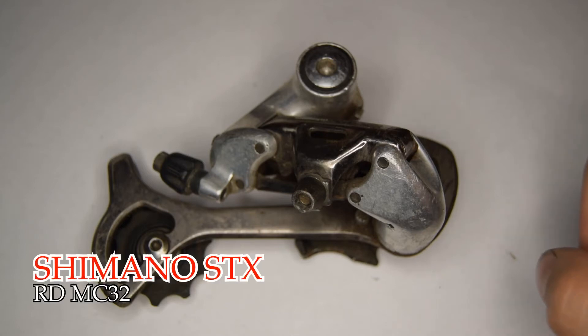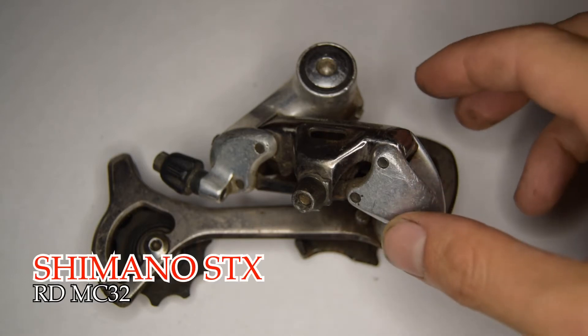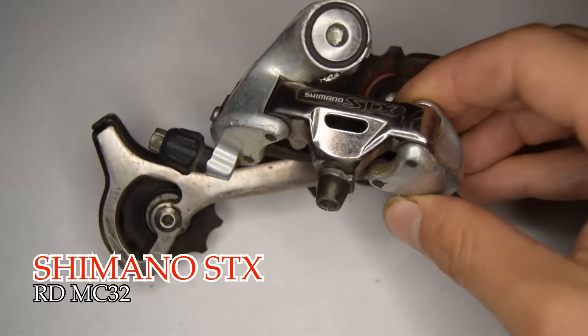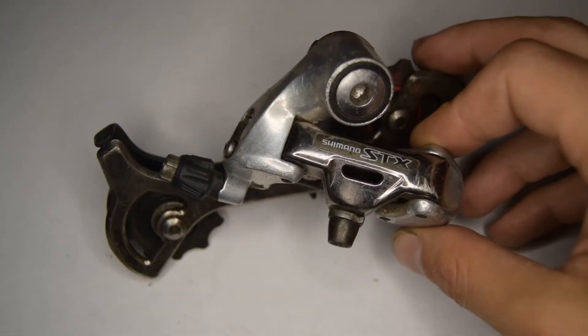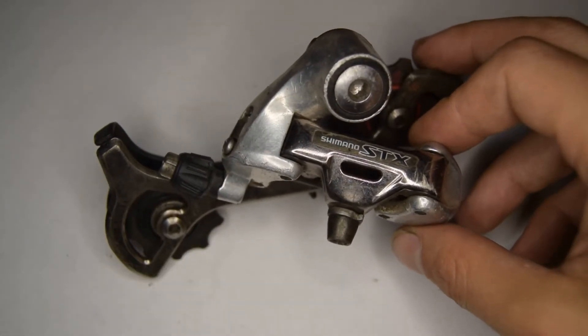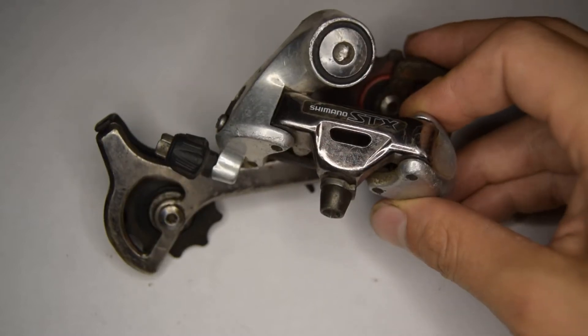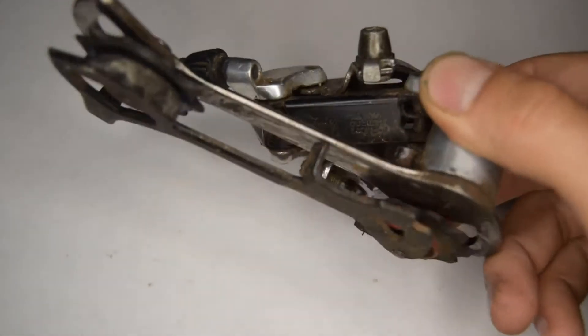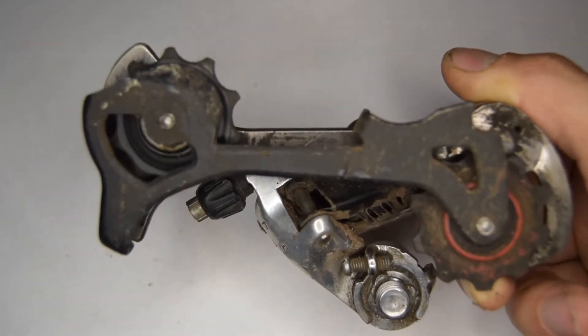Hello, welcome. Today I'm going to be working on this Shimano STX Special Edition rear derailleur, the MC32. This one was on my kid's bike and I've now replaced it with something with a shorter cage.